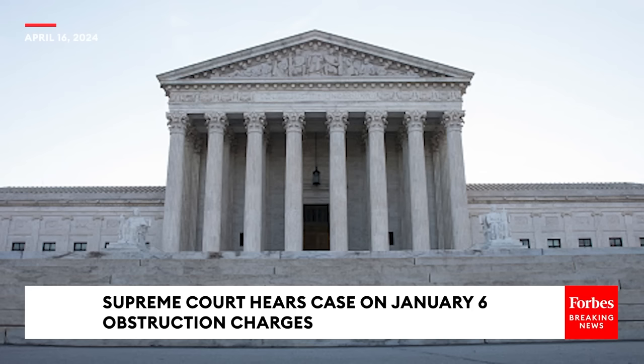Council, can I ask you — let's imagine that we agree with you on remand. Do you agree that the government could take a shot at proving that your client actually did try to interfere under C2 — obstruct evidence — because he was trying to obstruct the arrival of the certificates to the vice president's desk for counting? So there would be an evidence impairment theory.